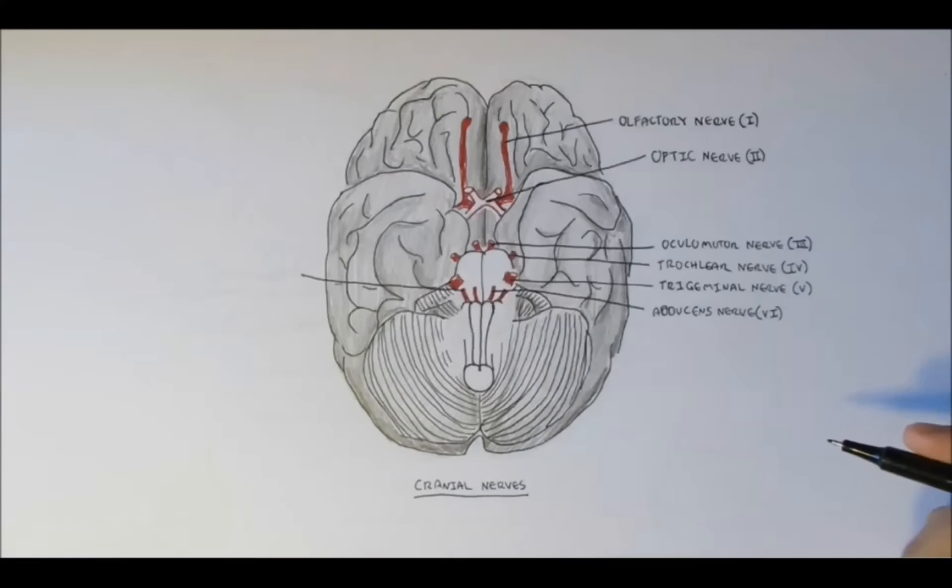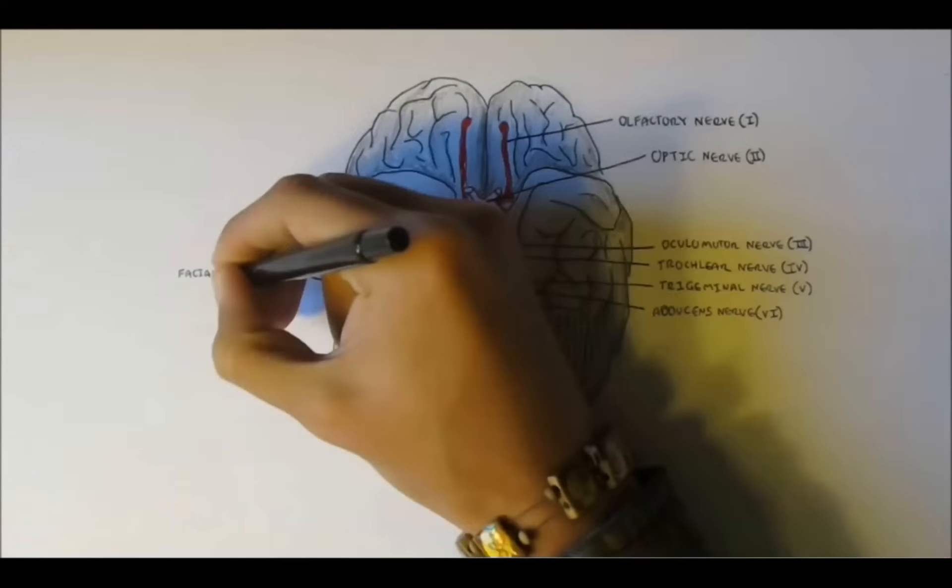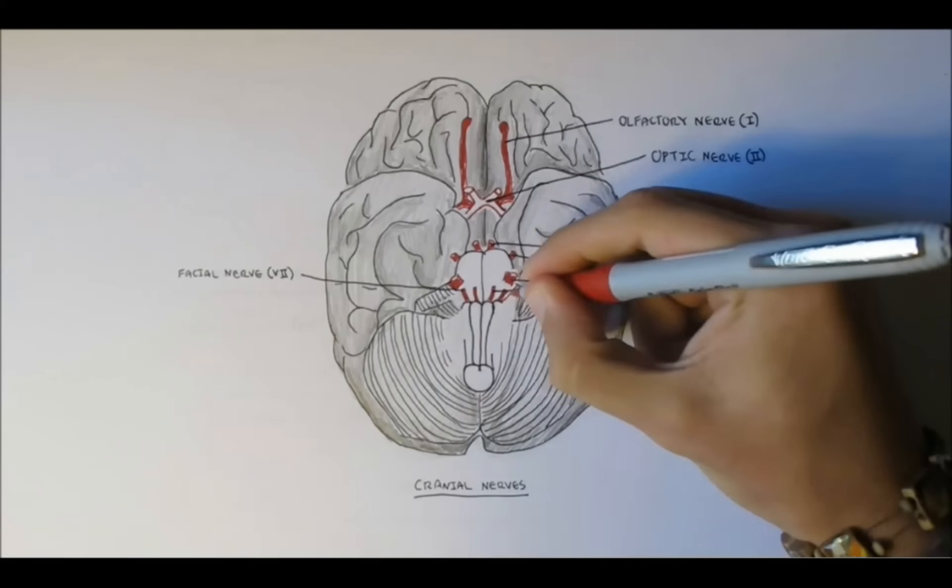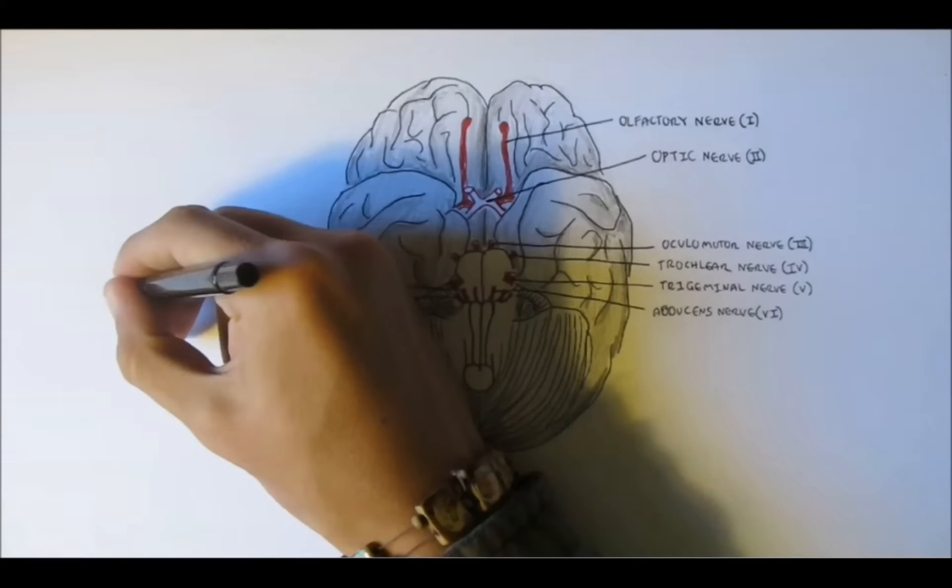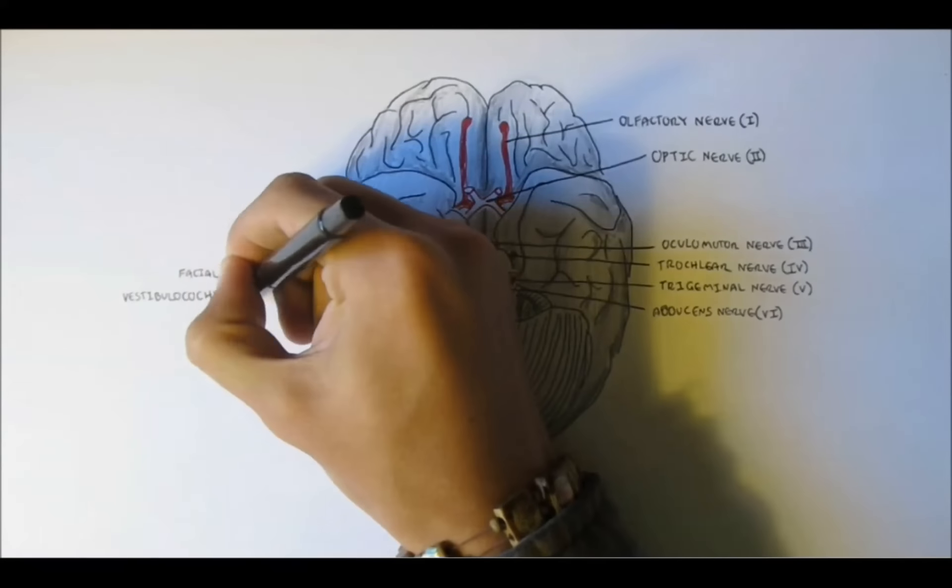And just below, just where the medulla oblongata starts, you can see nerve 8, which is the vestibular cochlear nerve, and also nerve 9, the glossopharyngeal nerve.